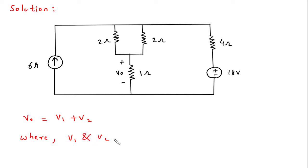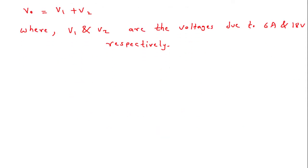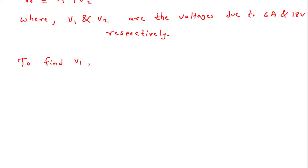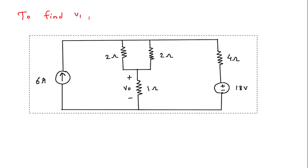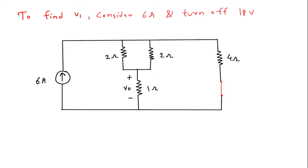V1 and V2 are the voltages due to the 6 ampere and 18 volt sources respectively. To find V1, we will consider 6 ampere and turn off 18 volt. When we turn off a voltage source, it becomes a short circuit. So 18V is replaced by a short circuit, and this will give us V1.